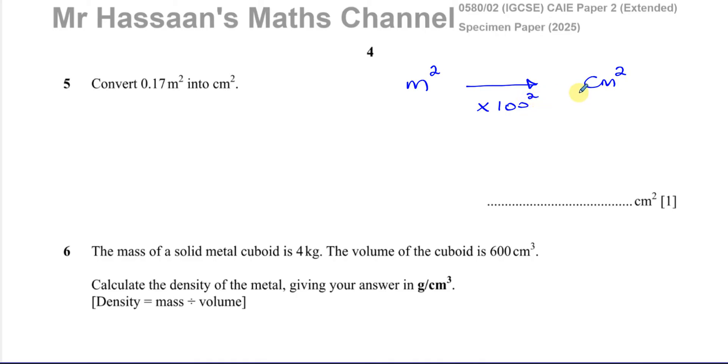So that gives us 0.17 times 100 squared. So how can we do this calculation easily? Well, I know 100 squared is the same as basically 1 with 4 zeros because it's 100 times 100. So 1 times 1 is 1 and then you've got 4 zeros altogether. So it's going to be 0.17 times 10,000.